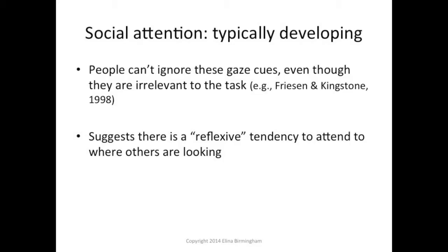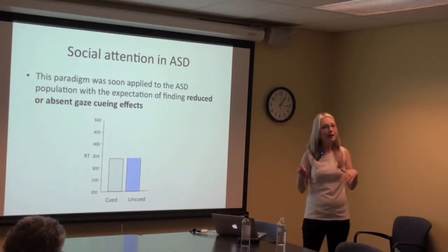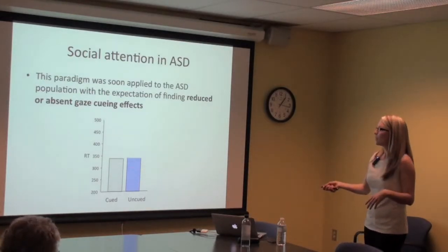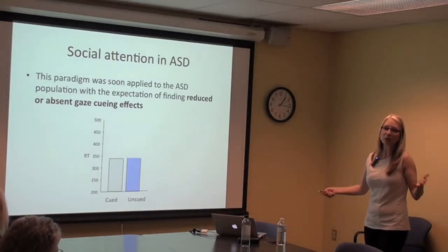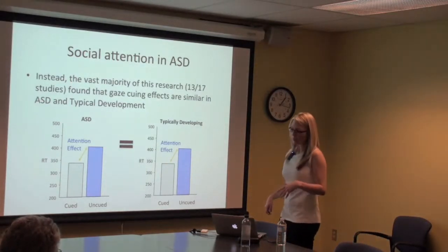Even so, people follow this cue and use it even though it's not helping them — suggesting a reflexive tendency to attend to where other people are looking. Researchers then applied this to individuals with ASD, expecting absent or reduced cueing effects. But time and again, people found essentially normal cueing effects — people with ASD are orienting in response to these non-predictive gaze cues. Thirteen out of 17 studies found basically equivalent orienting effects in autism.